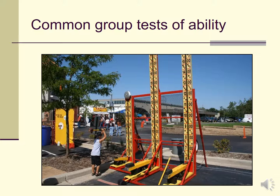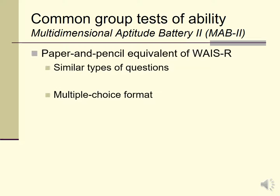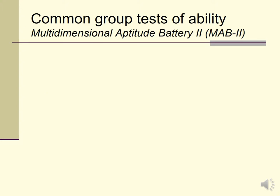Moving on to some common group tests of ability. First is the Multidimensional Aptitude Battery, Second Edition, or MAB-2. I'm placing this under ability testing even though its title calls it an aptitude test. It's a bit of an older test originally designed as a paper-and-pencil equivalent of the WAIS-R, an earlier version of the Wechsler adult intelligence scale. It was a paper-and-pencil version designed to have similar types of questions as the WAIS-R but administered in group format and graded with a multiple choice format, making it relatively easy to grade.